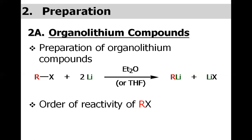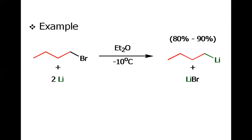As far as the order of reactivity is concerned for the haloalkanes, the alkyl iodide is most reactive in comparison with the alkyl bromide, which is followed by the alkyl chloride. This is an actual example: if we treat butyl bromide with lithium in ether, we have butyl lithium as the organolithium compound.